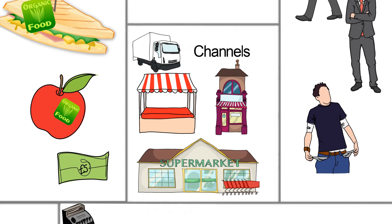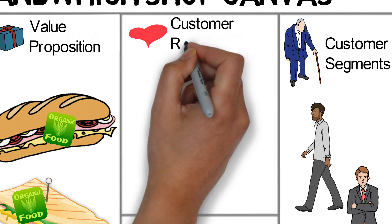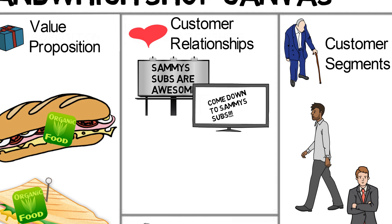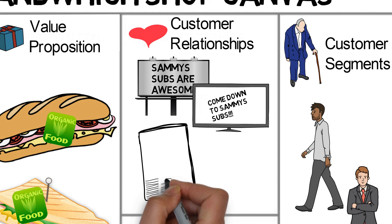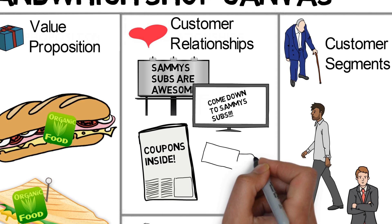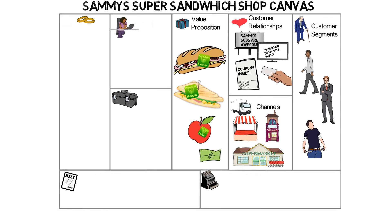But in order for Sammy to get customers through the doors, he must establish relationships with his customers. Here Sammy could decide to launch a national ad campaign. Afterwards, Sammy may also decide to include some coupons in the local papers to entice new customers to go to his shops. And finally, once Sammy has his customers, he can provide them with a loyalty card where they get one free sandwich after they buy nine.